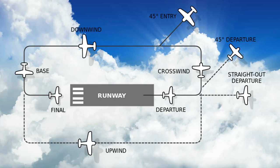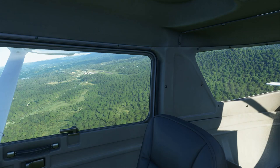Assuming that the runway we have in front of us runs from west to east, today we'll be departing from the threshold out towards the east. We'll take off and climb at 70 knots straight ahead on runway heading — this part of the circuit is known as the departure leg or the upwind leg. We'll climb at 70 knots until we reach 500 feet above aerodrome elevation and then make a left turn at around 15 degrees angle of bank onto the crosswind leg. The crosswind leg is 90 degrees off from the departure leg.